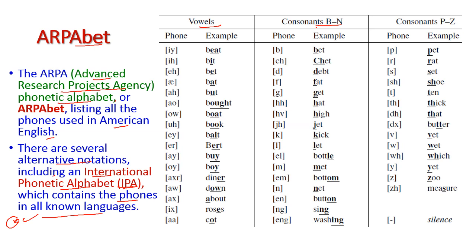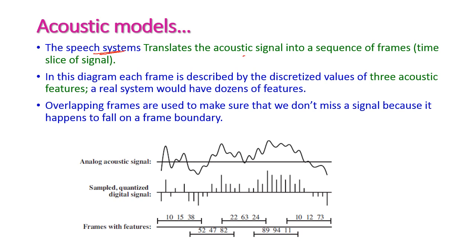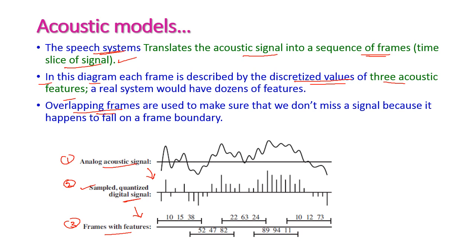The speech system translates the audio signal into a sequence of frames. A frame is a time-slice of the signal. In this diagram, each frame is described by discrete values of three acoustic features. The analog signal is sampled and quantized into a digital signal. From the digital signal, overlapping frames are extracted — frames F1, F2, F3 overlap each other — because at frame boundaries signals can be lost, and overlapping ensures no sound signal is missed.